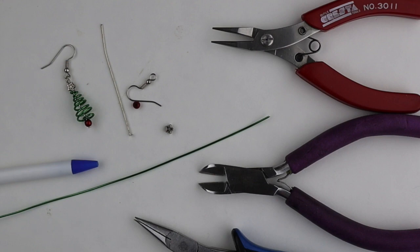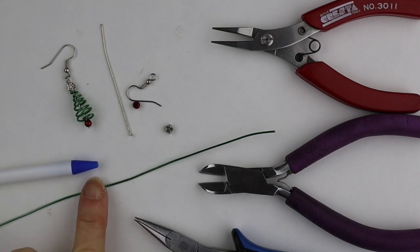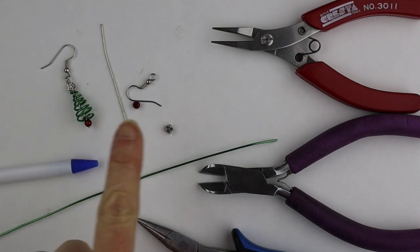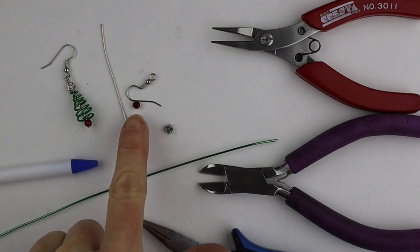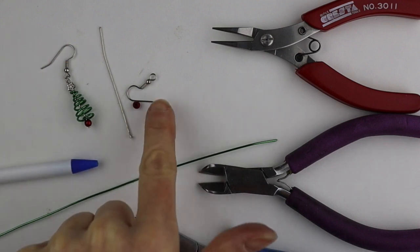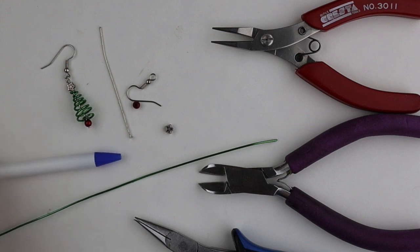So to make the tree earrings we're going to need some green wire. I'm using 20 gauge. You need a head pin, a star bead. I'm using little four millimeter miracle bead, earring hooks, and then your tools and also a pen with a little cone shape at the end.